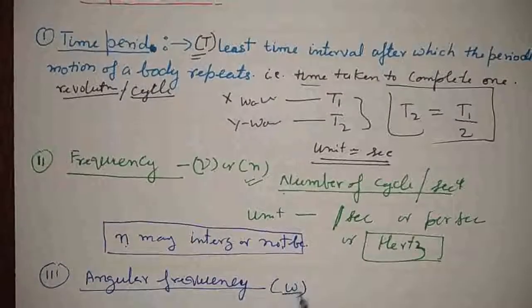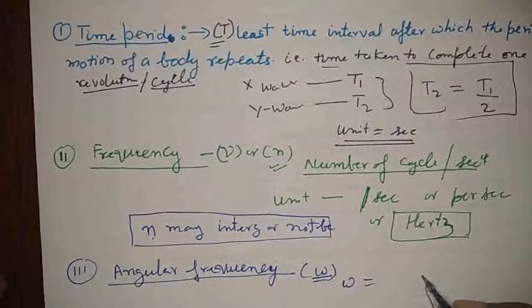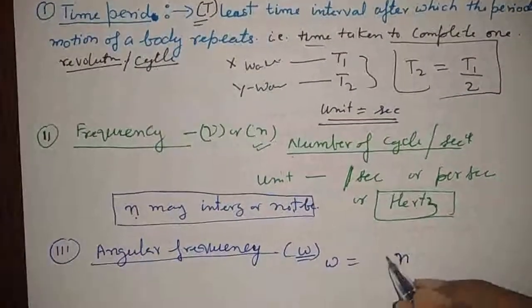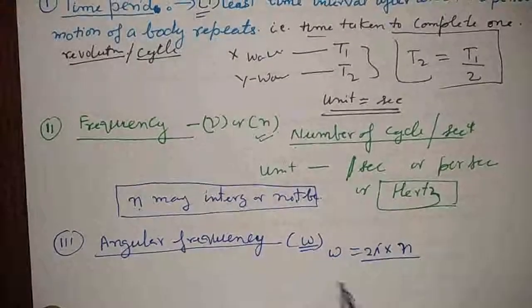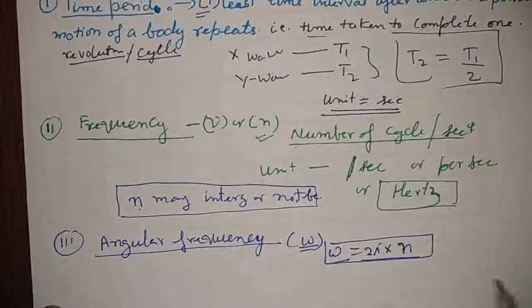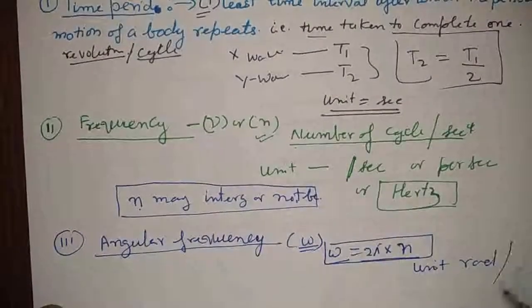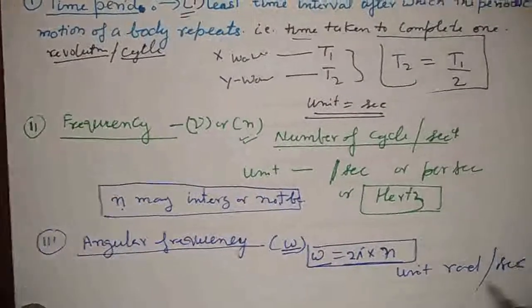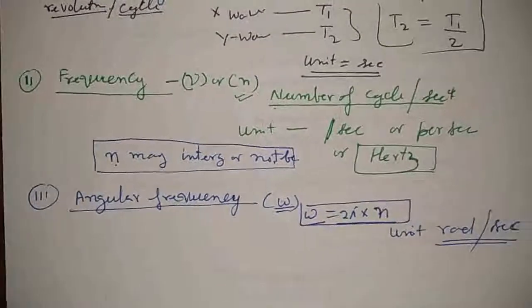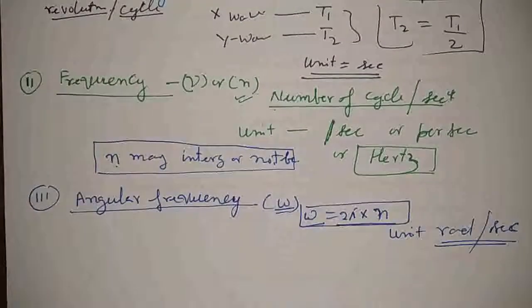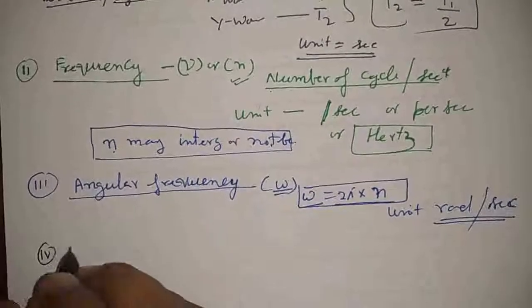Angular frequency omega is obtained by multiplying frequency by angular displacement 2π. Omega equals 2π times frequency, and it is represented in unit radian per second.